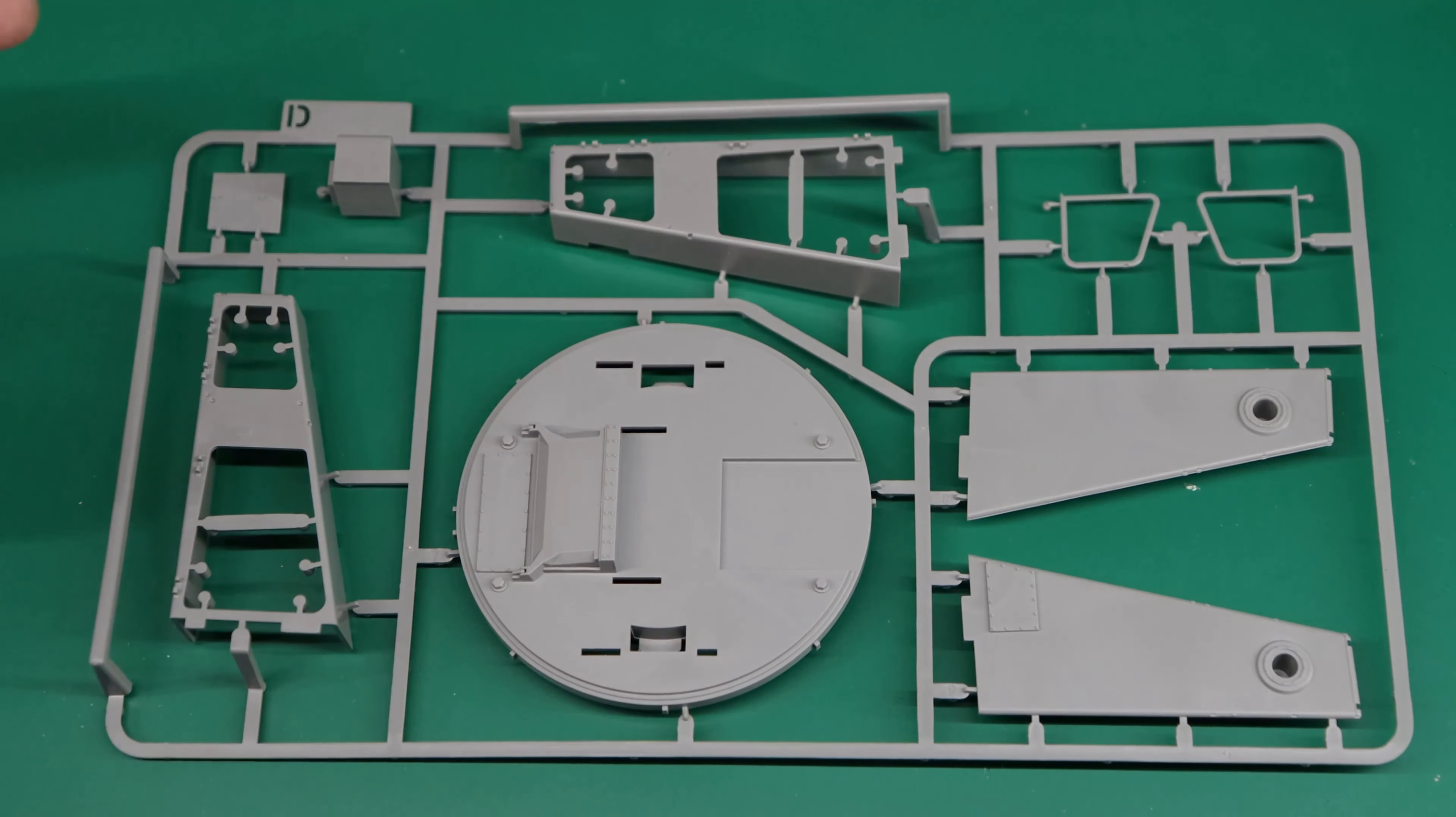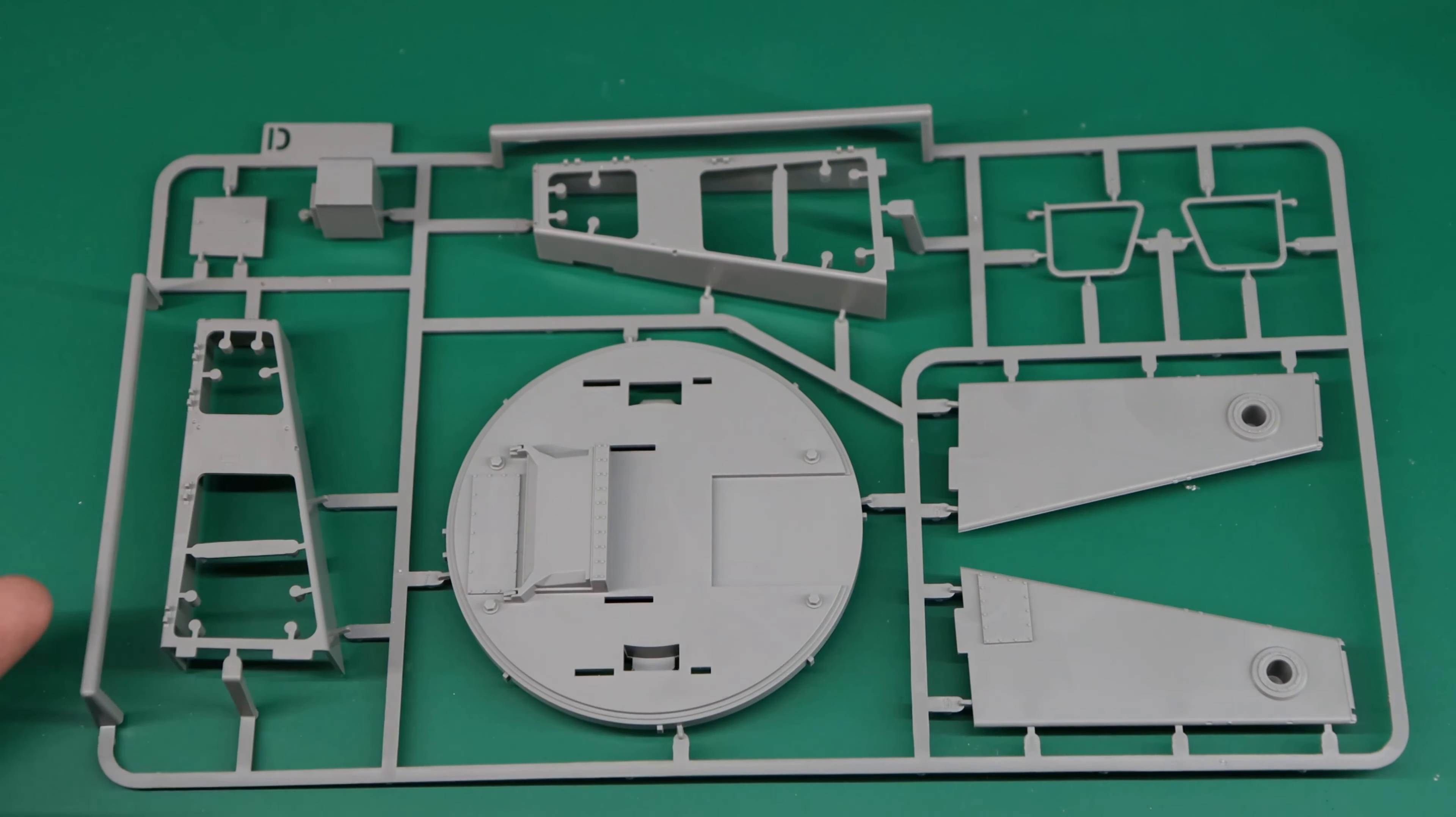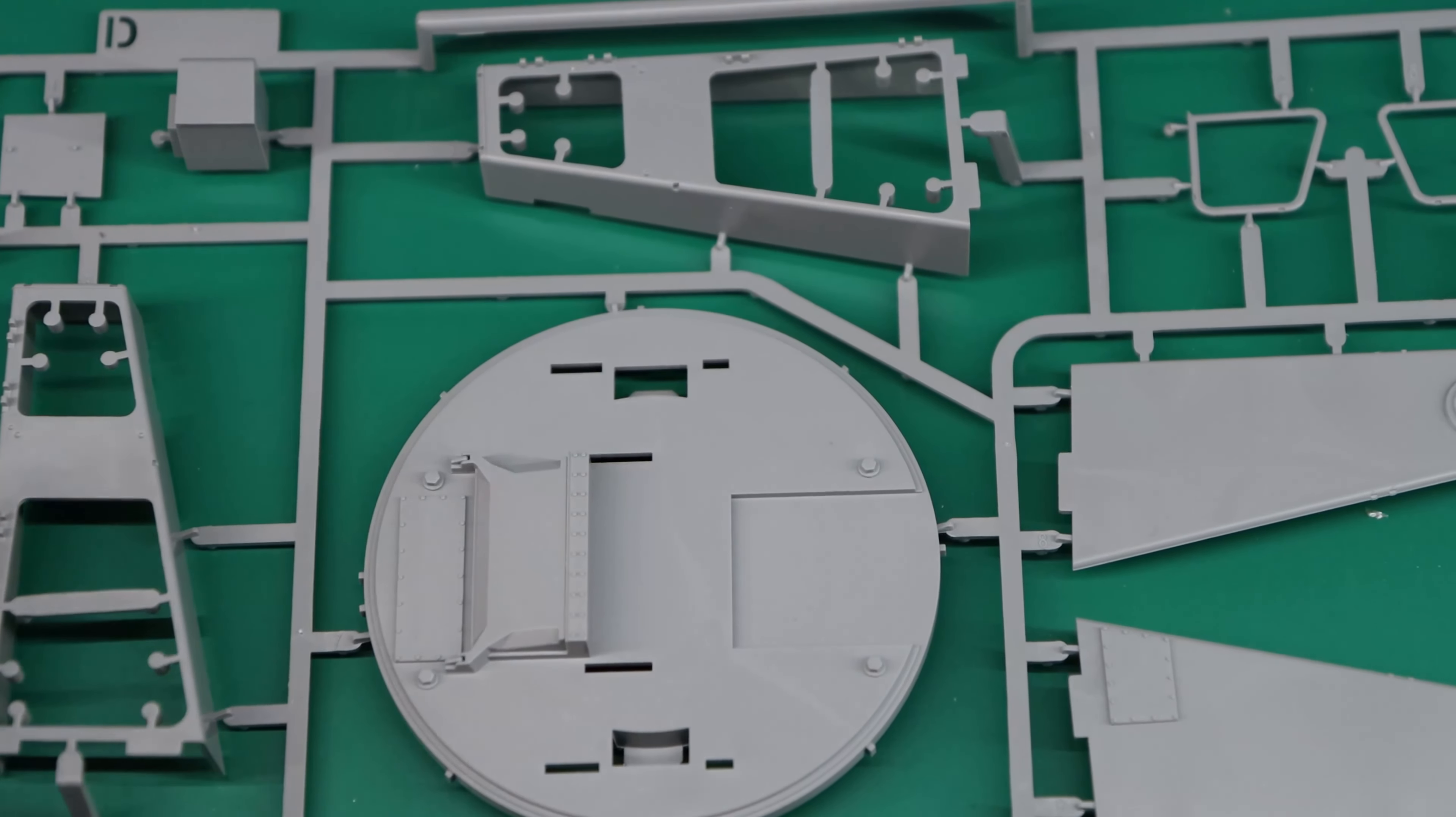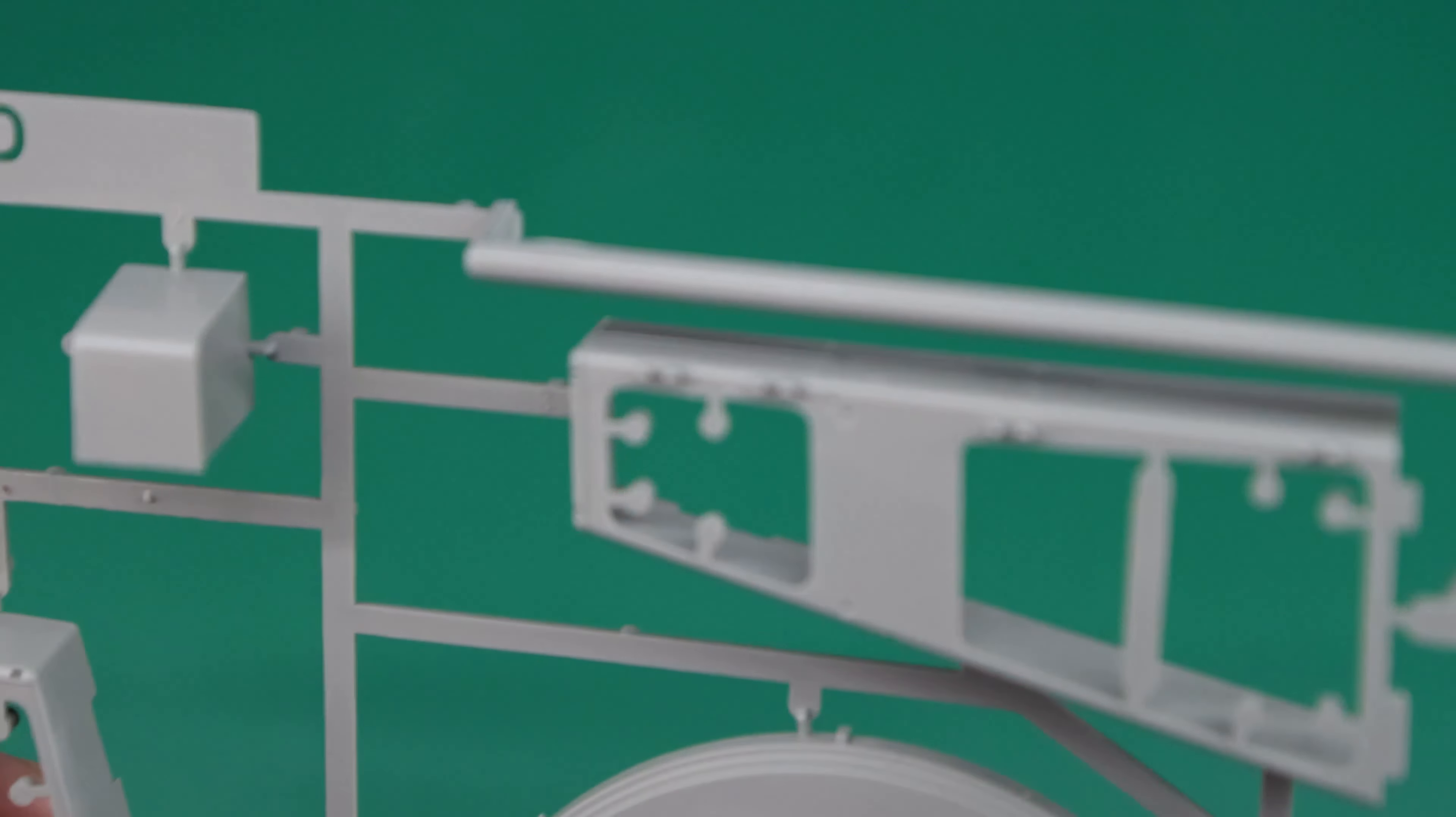The first sprue that I pulled out of the box at the top is actually sprue D. As you can see it's got the top part of the base as well as the two side supports and the other ends that go on the opposite side of those, as well as a couple frames and a few little boxes that go somewhere on the model. TACOM kit, new tooling, very well detailed.